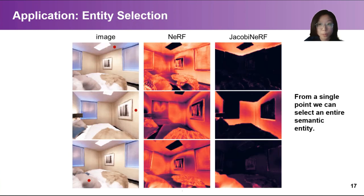From the perturbation response, we can also achieve entity selection. From a single point, we can select an entire semantic entity by simply perturbing the network weights along the gradient of the selected point and rendering the image from the same view of the perturbed network.